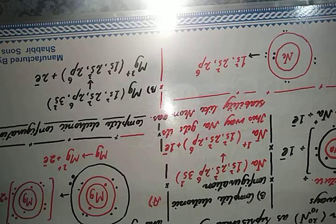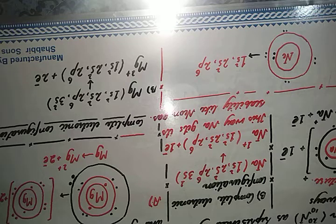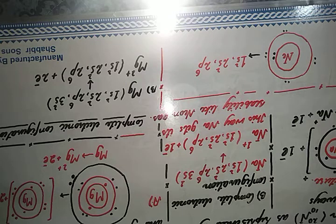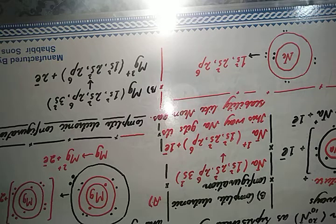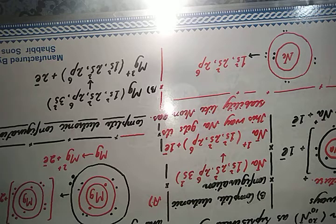These are the two ways through which we can represent cation formation. In exams, you may be given certain atoms and asked to represent them using either the Lewis dot structure method or the electronic configuration method. The key thing to remember is the atomic number — if you know the atomic number and how many electrons the atom has in its valence shell, it's much easier to form and represent its cations. Inshallah, in the next tutorial we will discuss more examples according to your syllabus and upcoming examination.